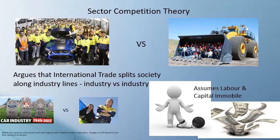Sector competition theory, by contrast, argues that international trade policy is a struggle between industries. In Australia, for example, you had a struggle between a car industry getting subsidies and a mining industry getting tax benefits. Even though there are workers and owners on both sides, they actually have different interests — so it's a fight for control of government policy over what gets tariffs and what gets subsidies.